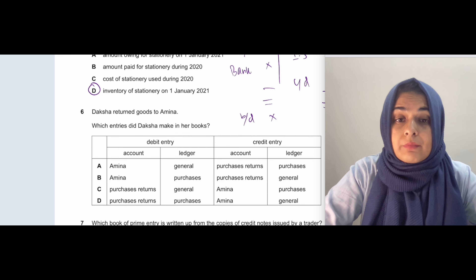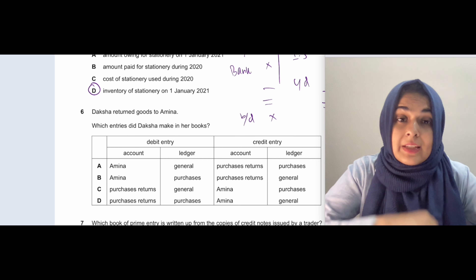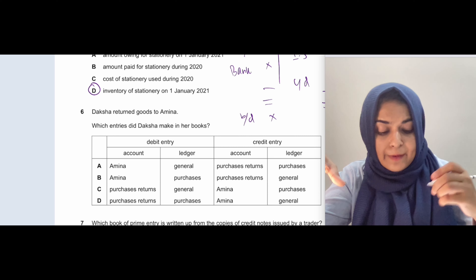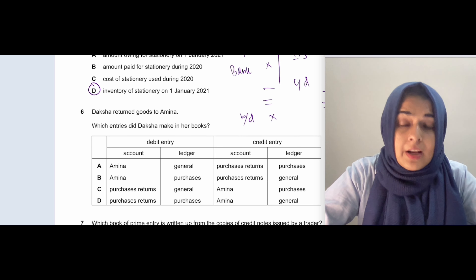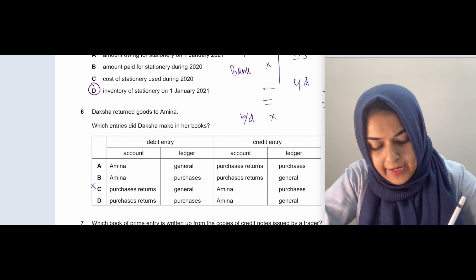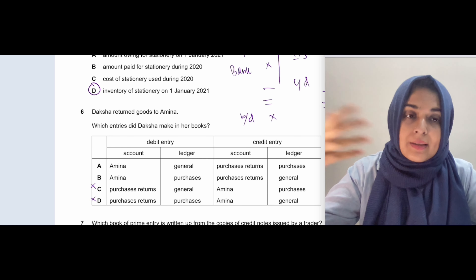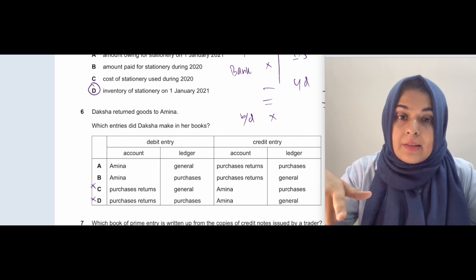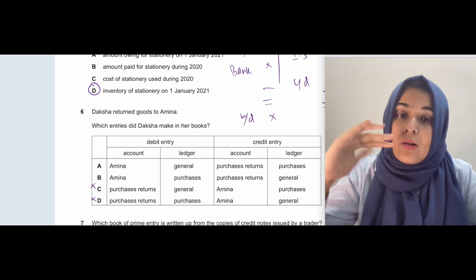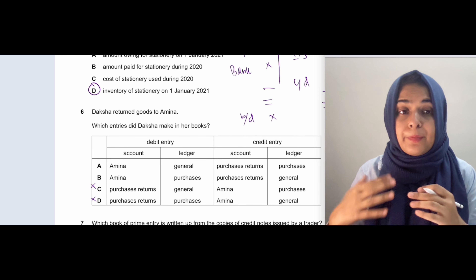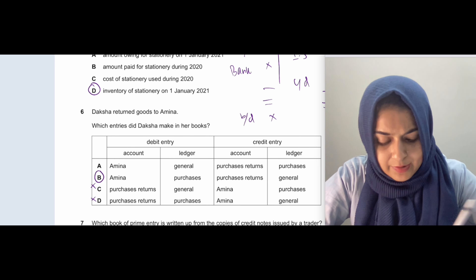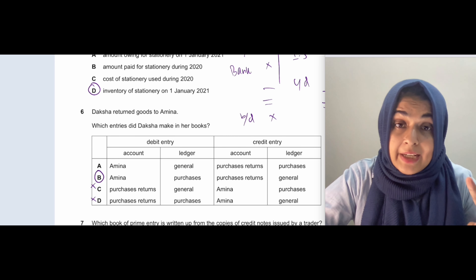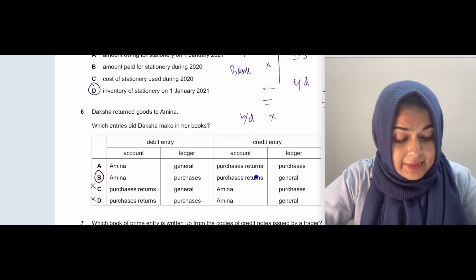Question six: Daksha returned goods to Amina. Which entries did Daksha make in her books? When you return goods, that is return outwards — also called purchases returns. Purchases returns will be credited. Look at it from the perspective that inventory is going out of the business — purchases returns account is credited, trade payable account is debited. So Amina is debited and purchases returns account is credited. Amina is debited because returning goods to the supplier reduces our liability toward that supplier.